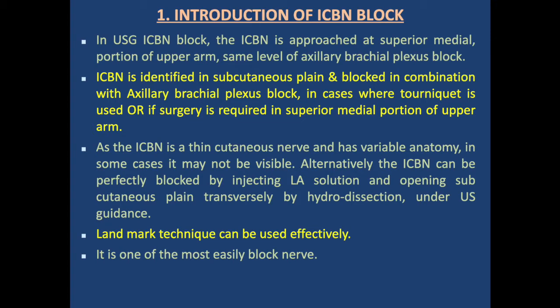As the intercostal brachial nerve is a thin cutaneous nerve with variable anatomy, in some cases it may not be visible. In this situation, it can be blocked by injecting local anesthetic solution and opening the subcutaneous plane transversely by hydrodissection under ultrasound guidance. The landmark technique can also be used effectively. This is one of the most easily blocked nerves and can be done without ultrasound or any equipment.